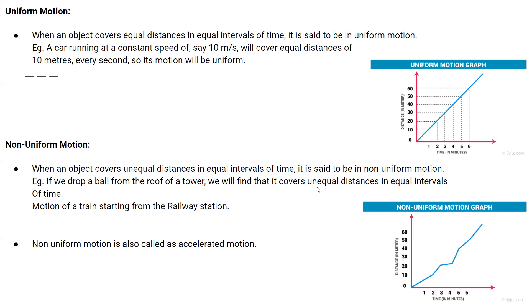One more example is the motion of a train starting from the railway station. So this is an example of non-uniform motion.